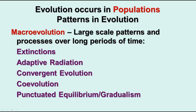This lesson is about patterns and mechanisms of evolution. We've talked about the fact that evolution occurs in populations, not in individuals. We need to look at two major patterns in evolution: macroevolution, which is large-scale patterns over long periods of time, and microevolution, which is about specific mechanisms.